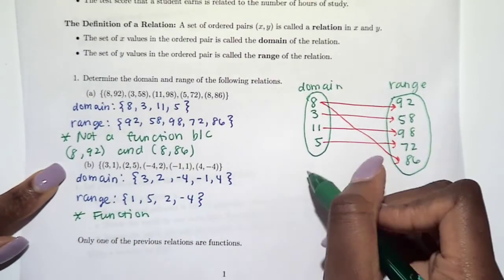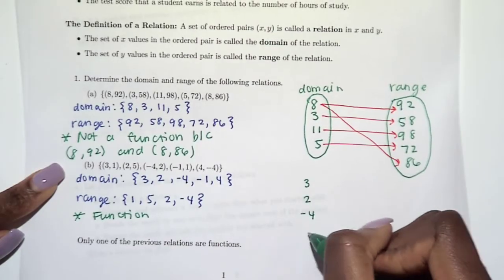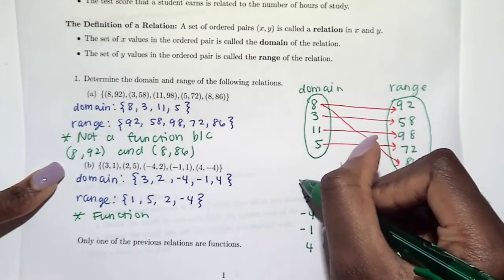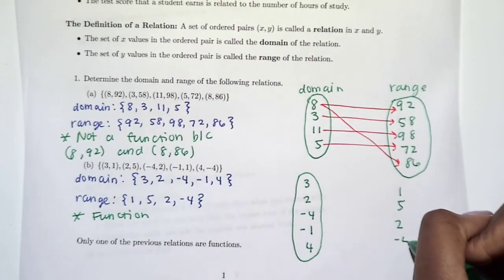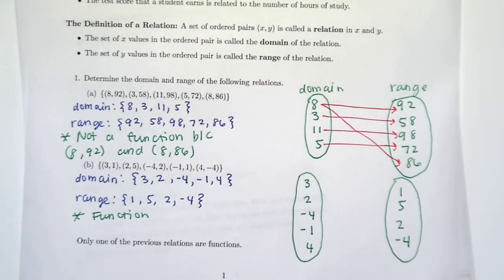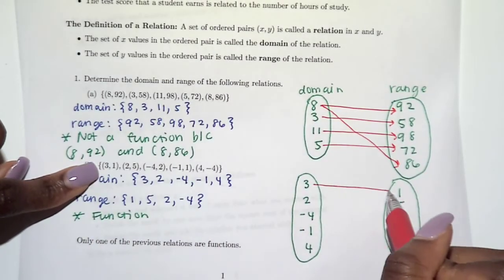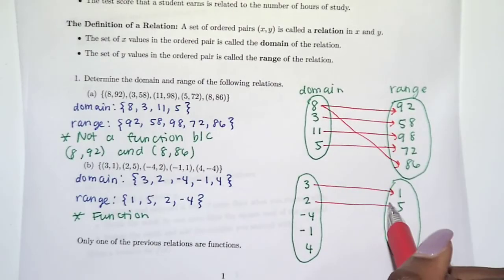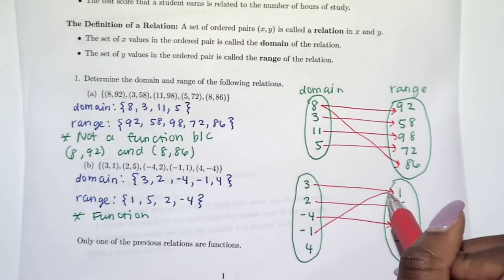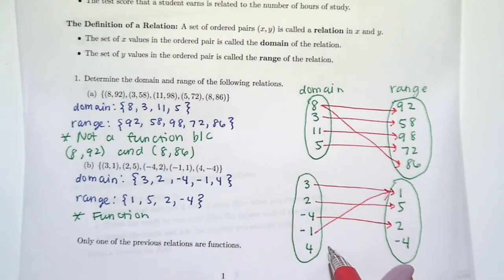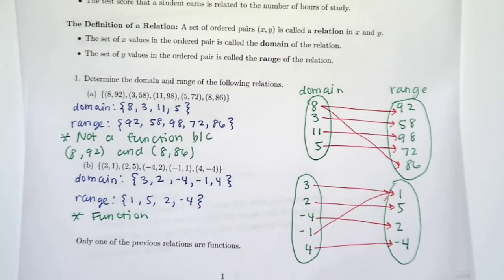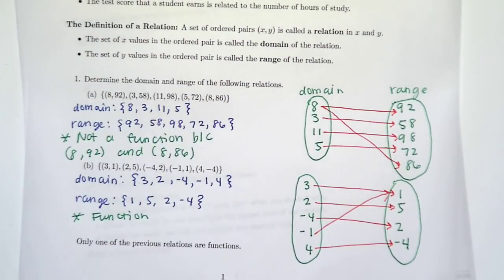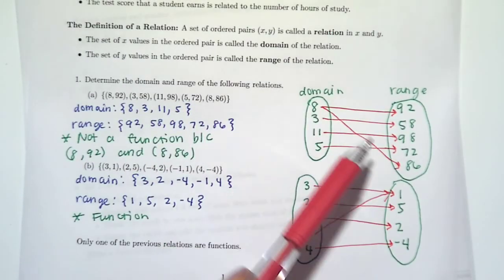If we compare it to this one, again I'm going to write the domain and range, and draw arrows based on my relation. So 3 goes with 1, 2 goes with 5, negative 4 goes with 2, negative 1 goes with 1, and 4 goes with negative 4. As you can see, each x value goes to one y value. Even though we have two that go to the same y, that's okay. We want to avoid this over here. In the y side, it's okay.